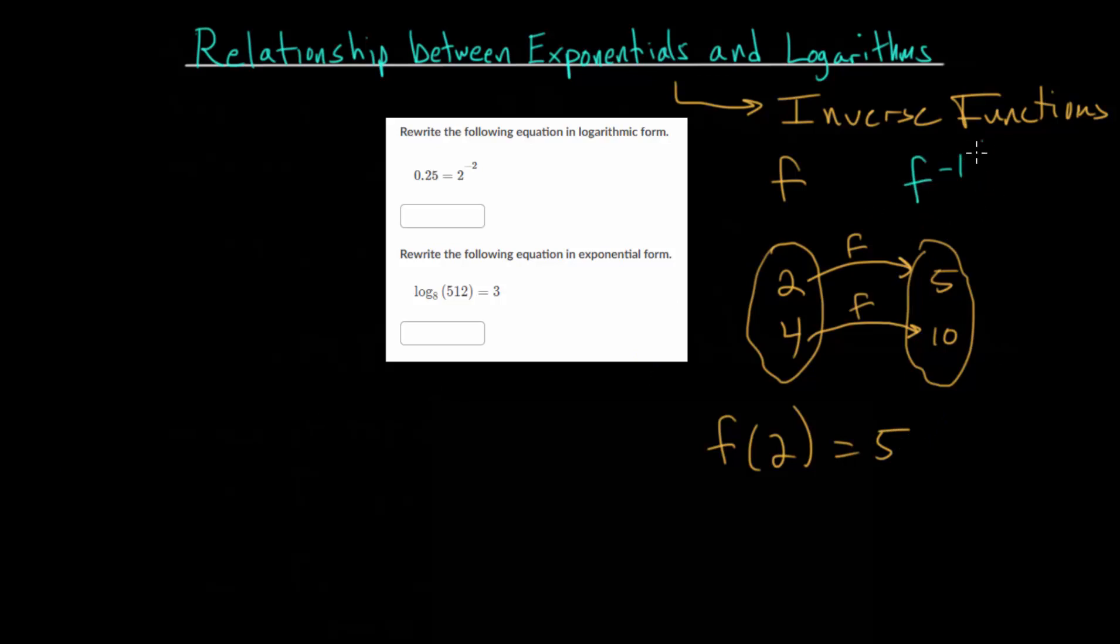So our inverse, which we write as f^(-1) here, this is not to the minus 1 power. This is just the notation for inverse functions. That would take our output and tell us what the original input was from our function. So the inverse function or the inverse mapping goes in the reverse direction. So we can say that f^(-1)(5) is equal to 2.